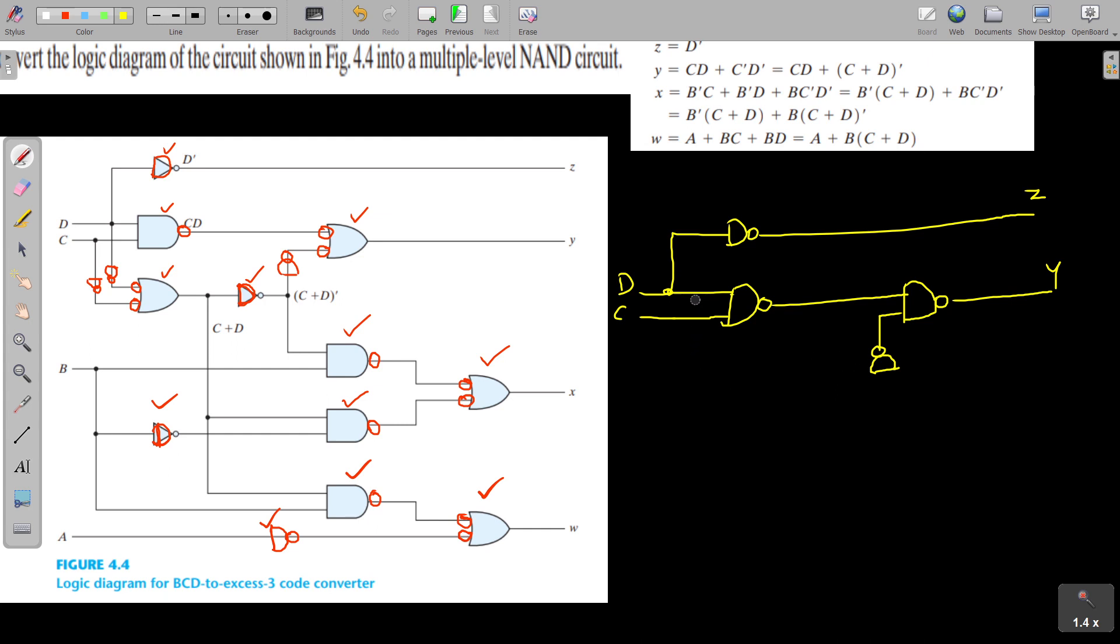Then here we start from here, this point. So to this we are adding an inverter using NAND gate. And from here also we take the connection from C and adding an inverter using NAND gate. And these two are given to another NAND gate because bubble OR is equivalent to NAND.